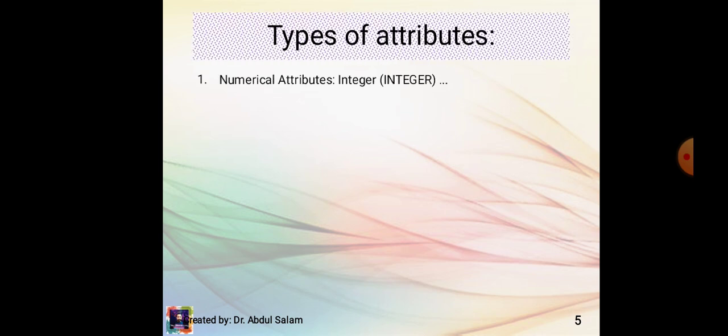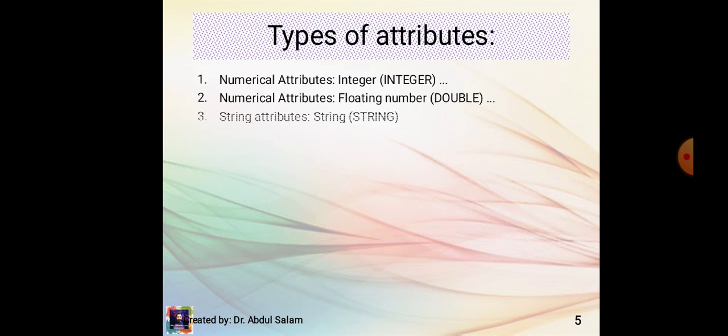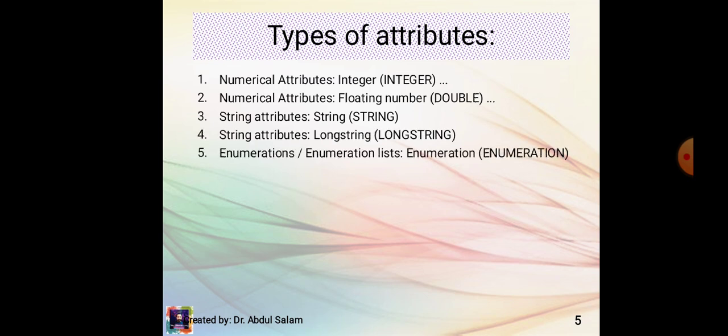Types of attributes: first, numeric attributes — integer; second, numeric attributes — floating number, double; third, string attributes — string number; fourth, string attributes — long string; and fifth, enumerations or enumeration list.